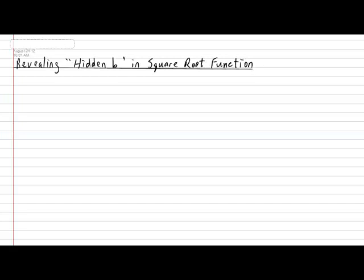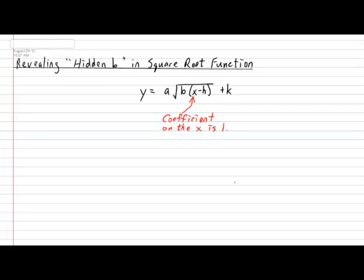We're going to begin this lesson by first reminding ourselves what the rule of a transformed square root function looks like when it's written in proper format. It looks like the following: Y equals A multiplied by the square root of B times X minus H, and then plus K. Now the big question is why is this considered proper format? It's considered proper format because the coefficient in front of the X is a positive 1.